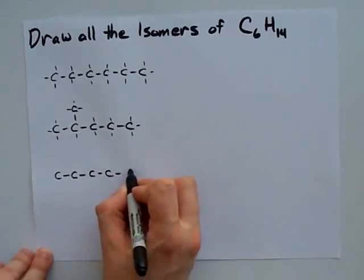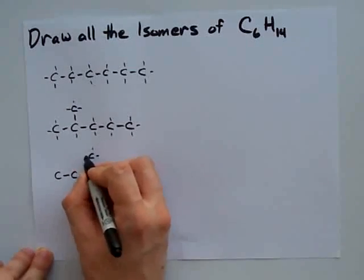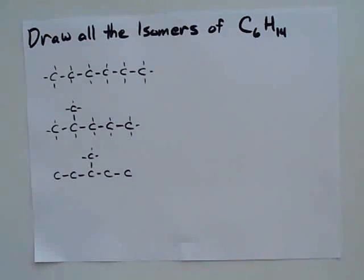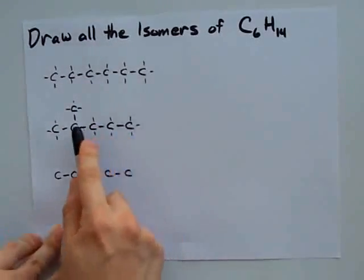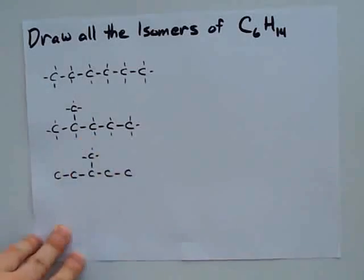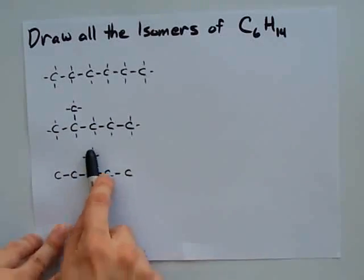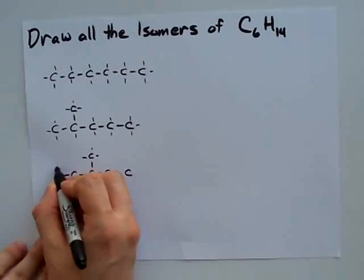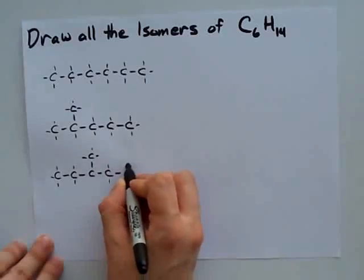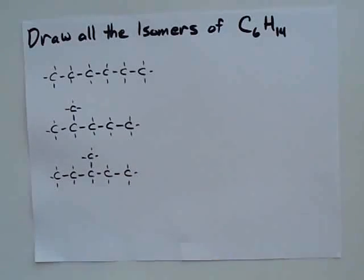Try to draw the third isomer. Take the five carbon chain and try to reattach the remaining carbon to the center carbon. In the second structure you see the carbon attached to the center carbon, and in the third structure the carbon is attached to the third carbon. Now substitute with the remaining hydrogens. You again get a total count of 14 hydrogens. So this is the third isomer of C6H14.